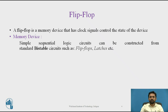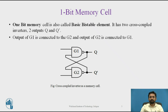It has two outputs: one is normal and another is the complement of the first. A one-bit memory cell is also called a basic bistable element. It has two cross-coupled inverters and two outputs, Q and Q-bar. It is called bistable because the basic bistable element circuit has two stable states: one is logic 0 and another is logic 1.